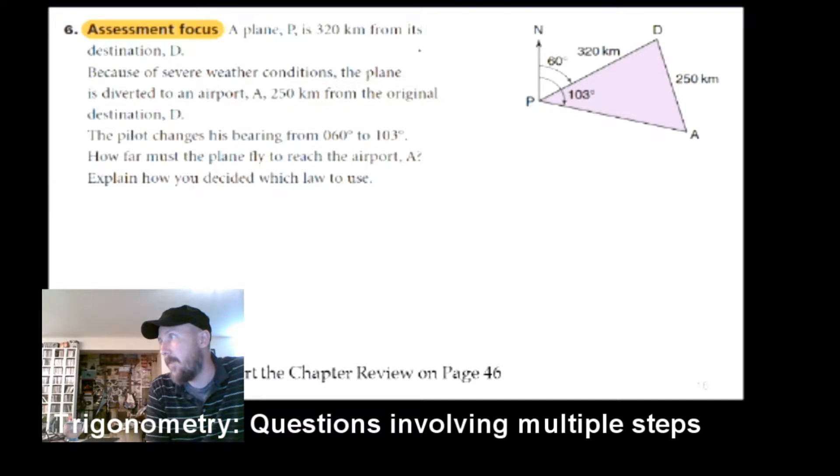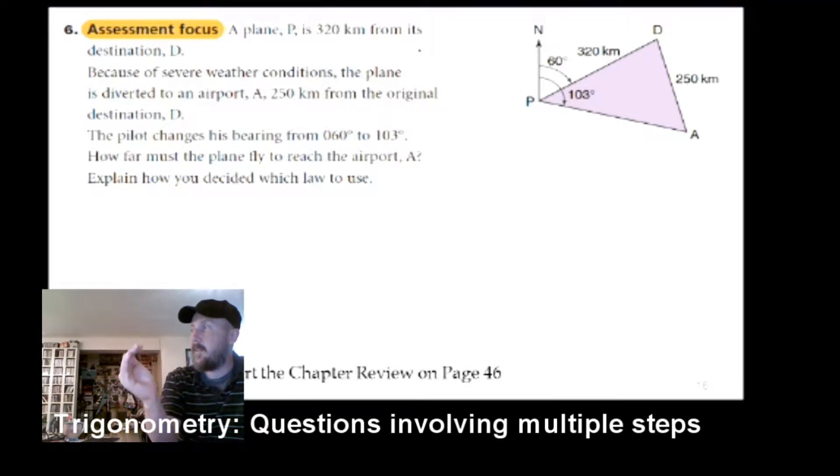Because of severe weather conditions, the plane is diverted to an airport A, 250 kilometers from the original destination D. The pilot changes his bearing. Bearings are measured from north, so that's why normally it's 60. Now he's going 103.